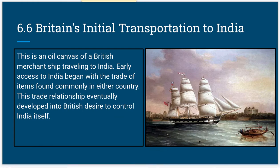In 6.6, the idea of the influence of migration to India is explored through different means. For example, this is an oil painting of a British merchant ship traveling to India. Access to India began to influence exponentially as the British began their main control over the region, developing into a large trade relationship that eventually led to the British desire to control India in its entirety.